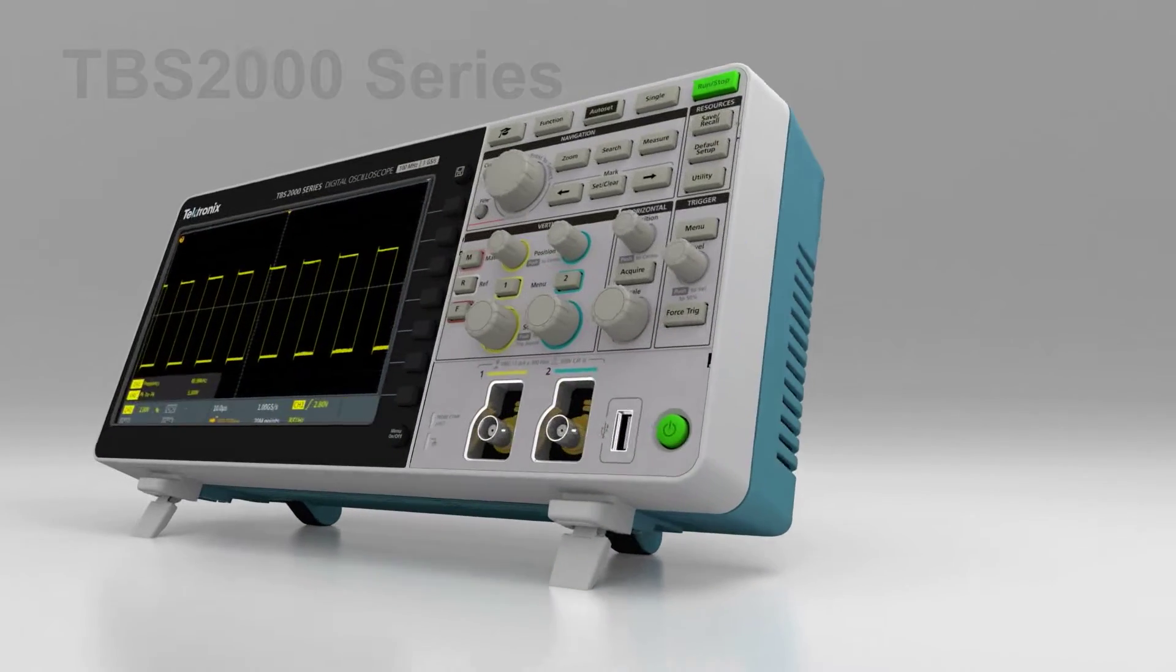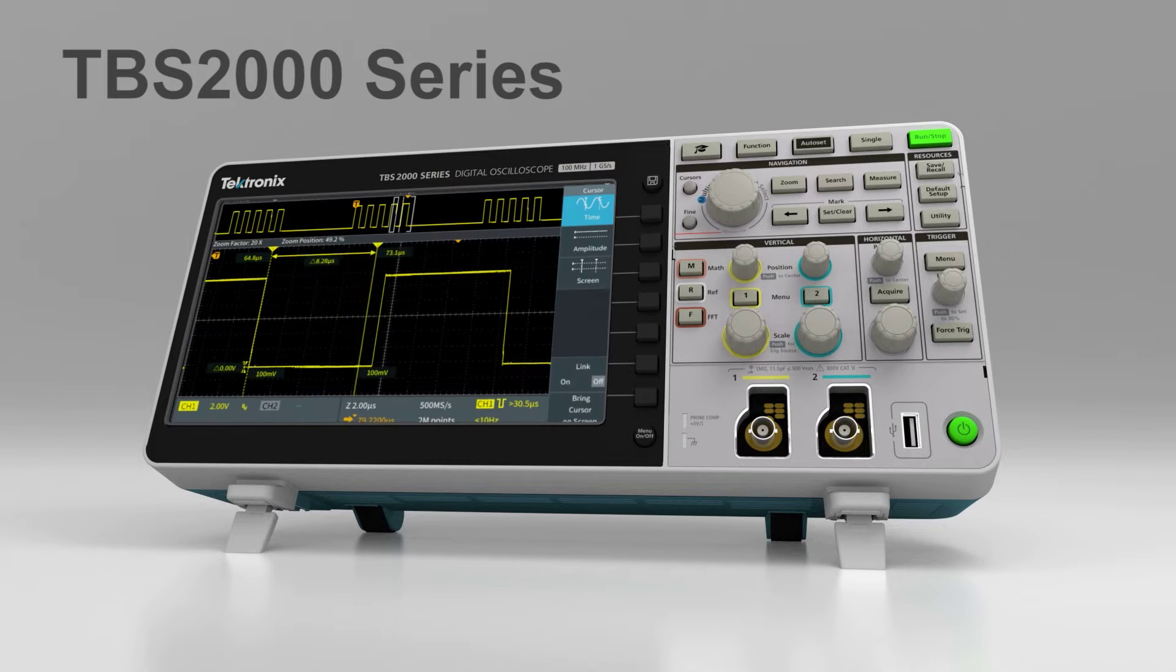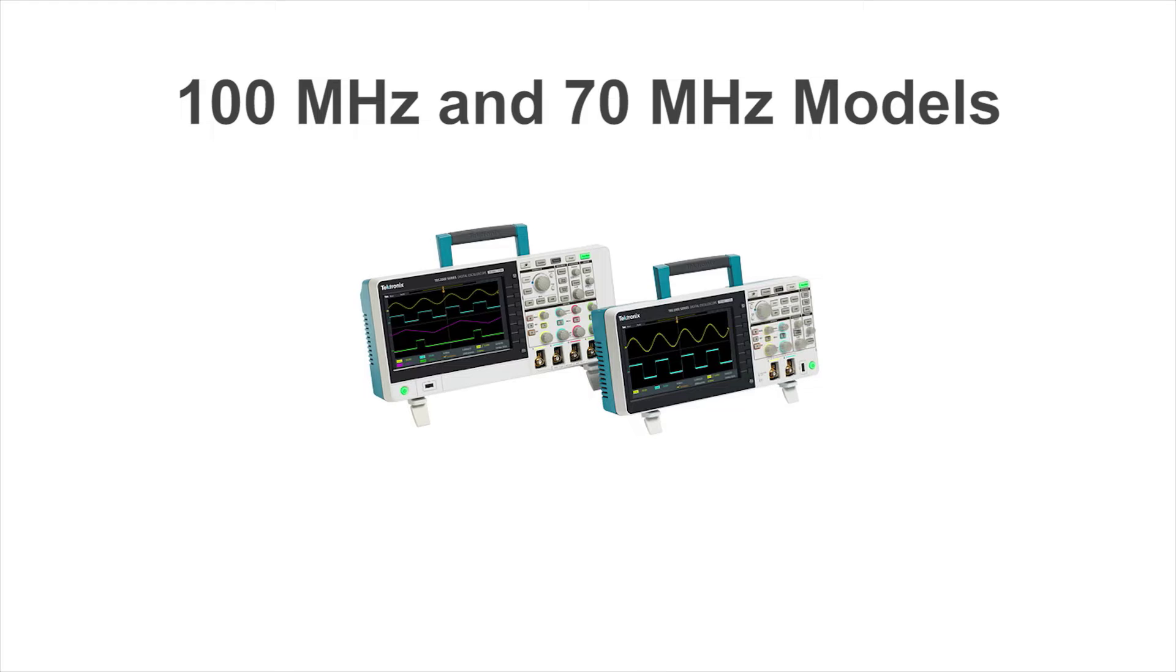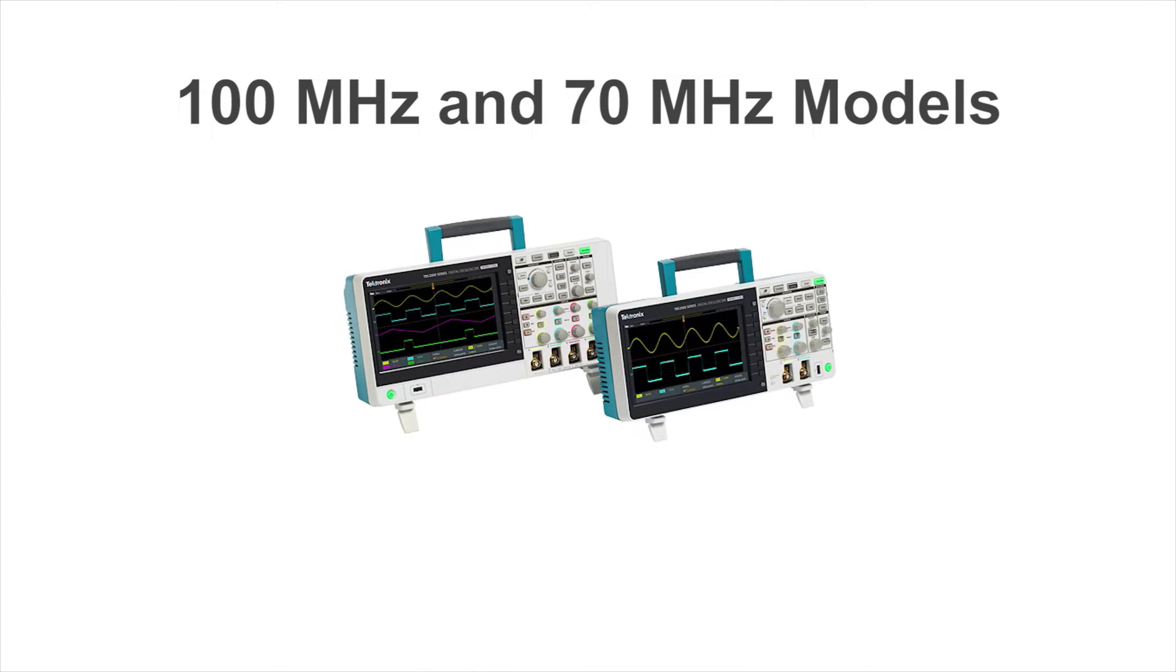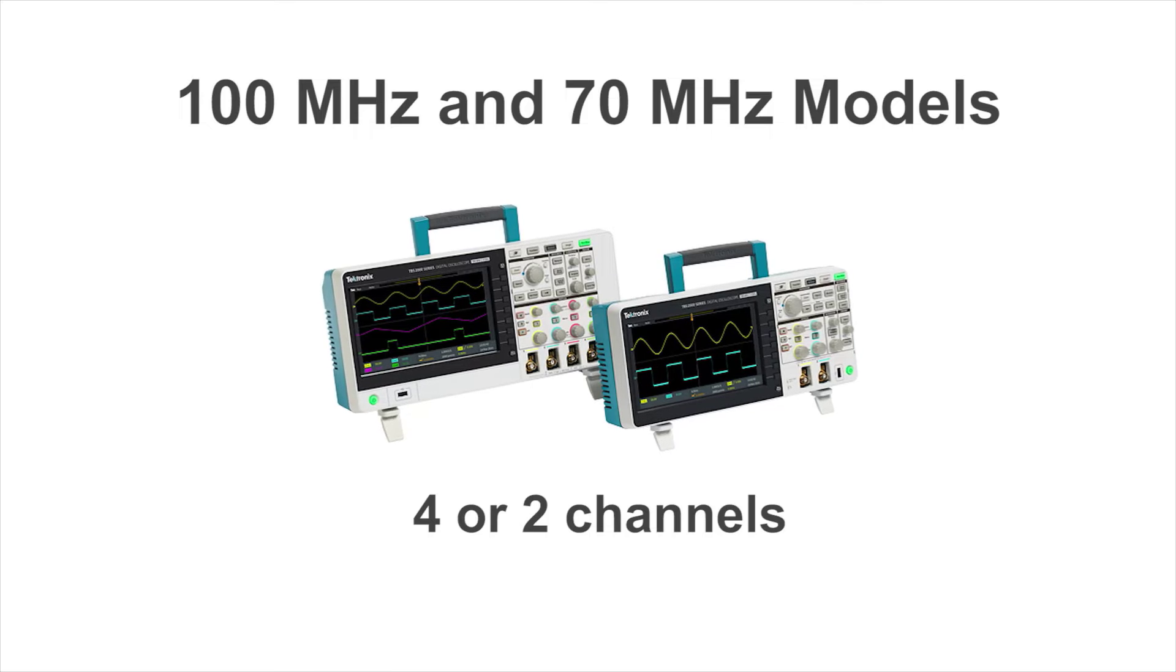The Tektronix TBS 2000 series has more features and performance than you'd expect from an entry-level scope. Choose from two models to suit your R&D or educational application: the compact 2-channel version or the 4-channel version for more complex challenges.